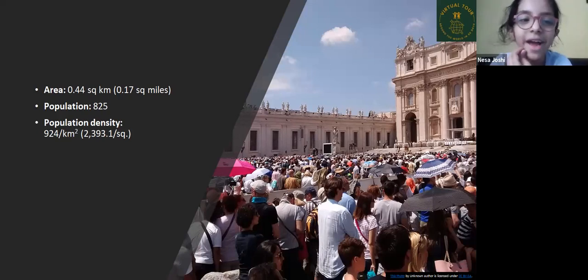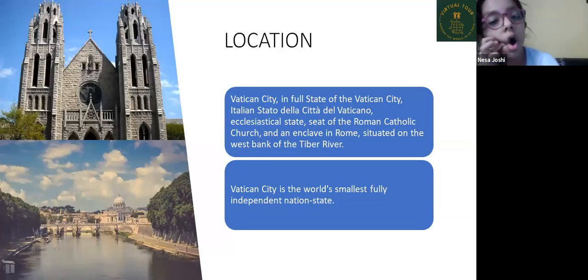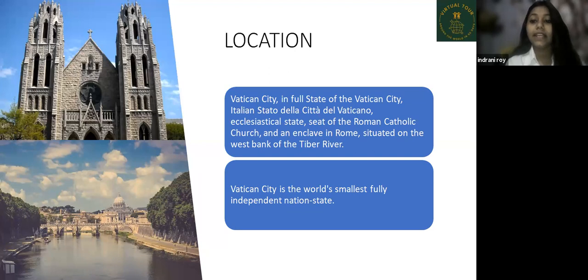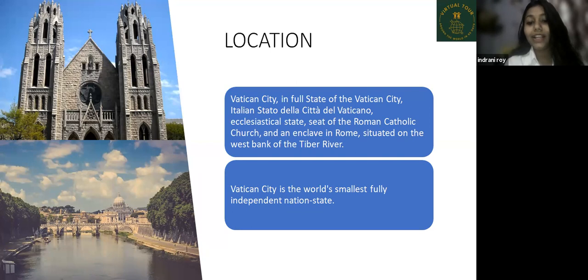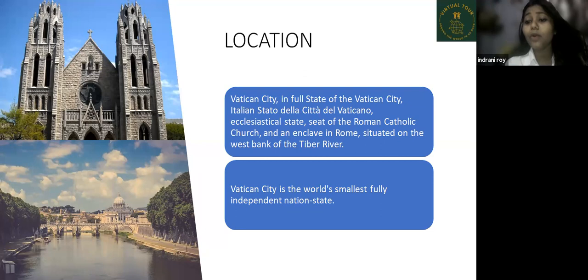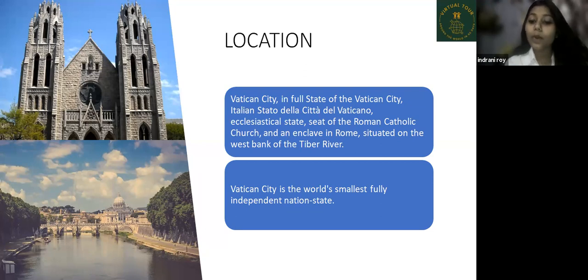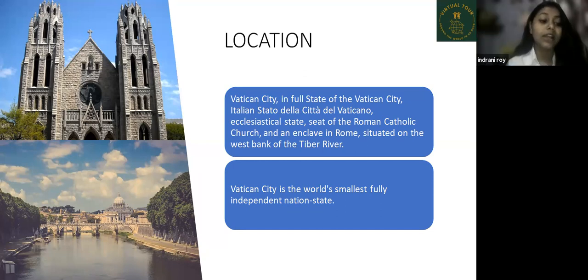The location of Vatican City is the full State of the Vatican City — Italian: Stato della Città del Vaticano — it's a tricky name. It is the seat of the Roman Catholic Church and an enclave in Rome, situated on the west bank of the Tiber River. Vatican City is the world's smallest fully independent nation state.